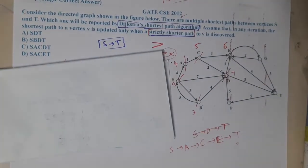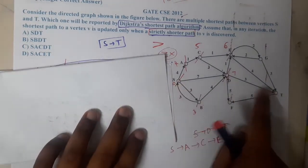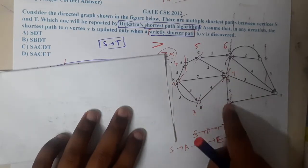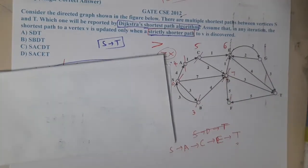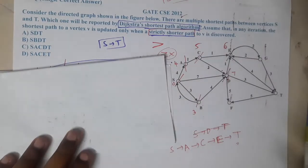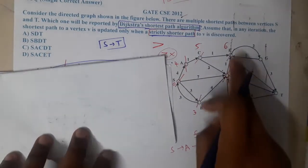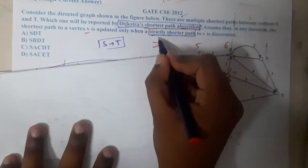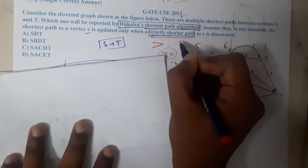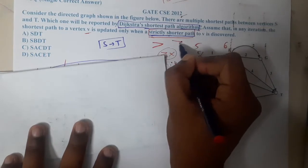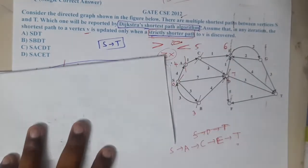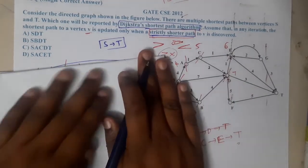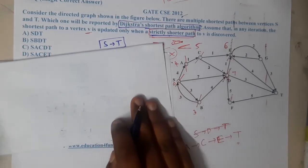Which one of the following paths is reported by Dijkstra's shortest path algorithm? From s to t there are various paths. The key condition is: in any iteration, the shortest path of vertex v is updated only if the new value is strictly less than the current value. If it is equal, you are not going to update.